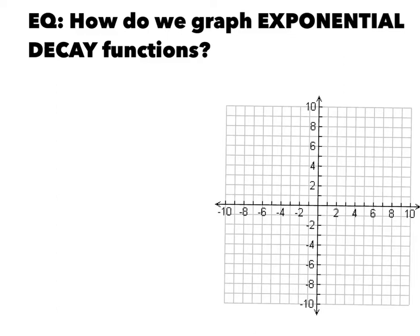So how do we graph exponential decay functions? Decay functions and growth functions have the same parent function. That parent function is still y equals b to the x. The only difference is that with growth, b is greater than 1, and for decay, b is between 0 and 1.